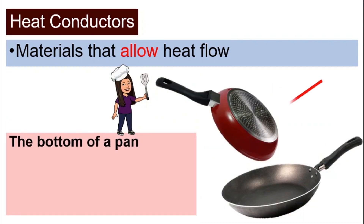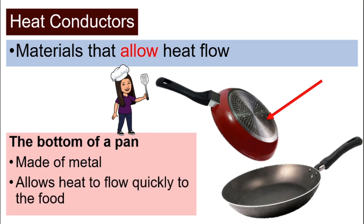Secondly, is the bottom of a pan. The bottom of a pan is also made of metal, and it is very important for the bottom of the pan to allow heat to flow quickly so that we can cook properly.